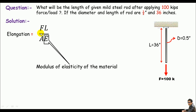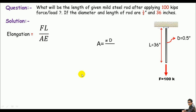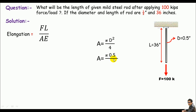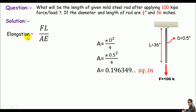Since F, L, and E are given, we just need the cross-sectional area. The cross-sectional area is A = πD² / 4, because this is a rod and the diameter is given. Plugging in the diameter of 0.5 inches: A = π × (0.5)² / 4, which gives A = 0.196 in².